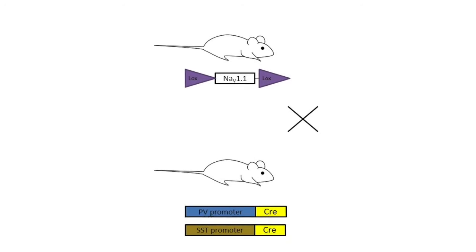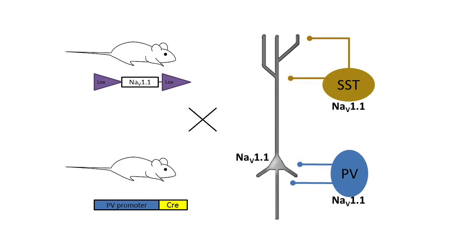To answer that question, we employ the Cre-lox method. We use two different Cre lines, one in which Cre is expressed under the parvalbumin promoter, leading to specific deletion of Nav1.1 only in parvalbumin-expressing interneurons, and a second Cre line in which Cre is expressed under the somatostatin promoter, leading to selective deletion of Nav1.1 in somatostatin-expressing interneurons. We also bred those two Cre lines together to achieve simultaneous deletion of Nav1.1 in both parvalbumin and somatostatin-expressing interneurons, resulting in deletion of Nav1.1 in about 75% of the brain's interneurons.